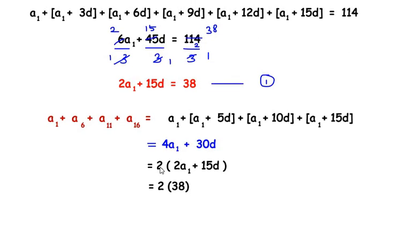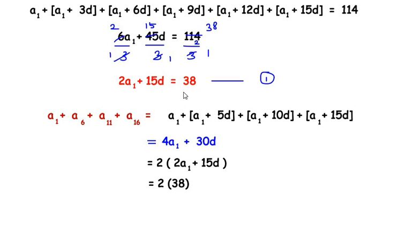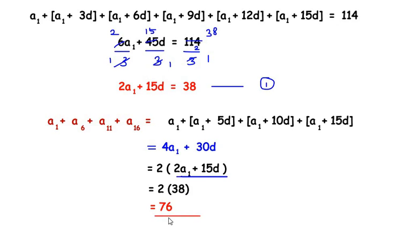We did this because in equation 1 we had got 2a1 plus 15d, which means here in place of 2a1 plus 15d we can substitute its value, that is 38. So replacing the bracket by 38 we get 2 times 38, which equals 76. This is the answer for the given sum of the series.